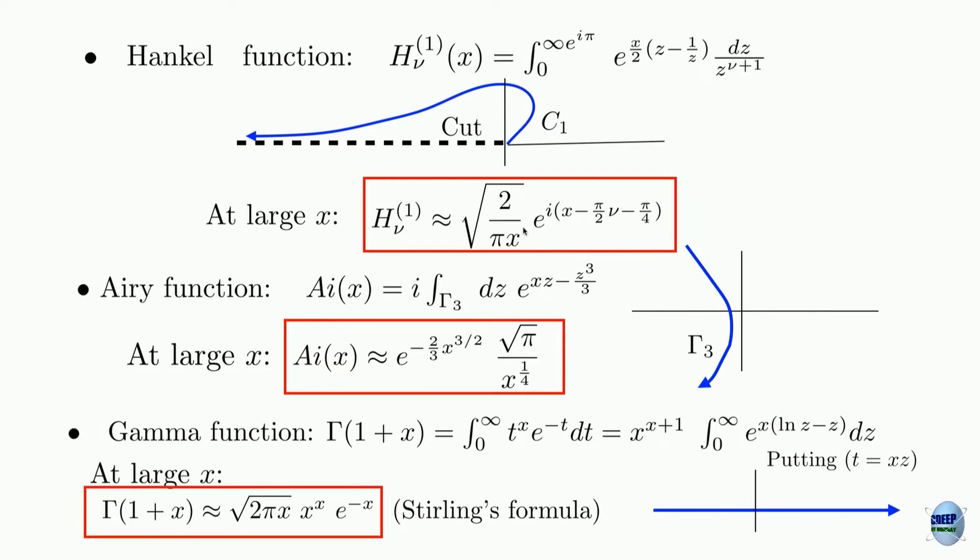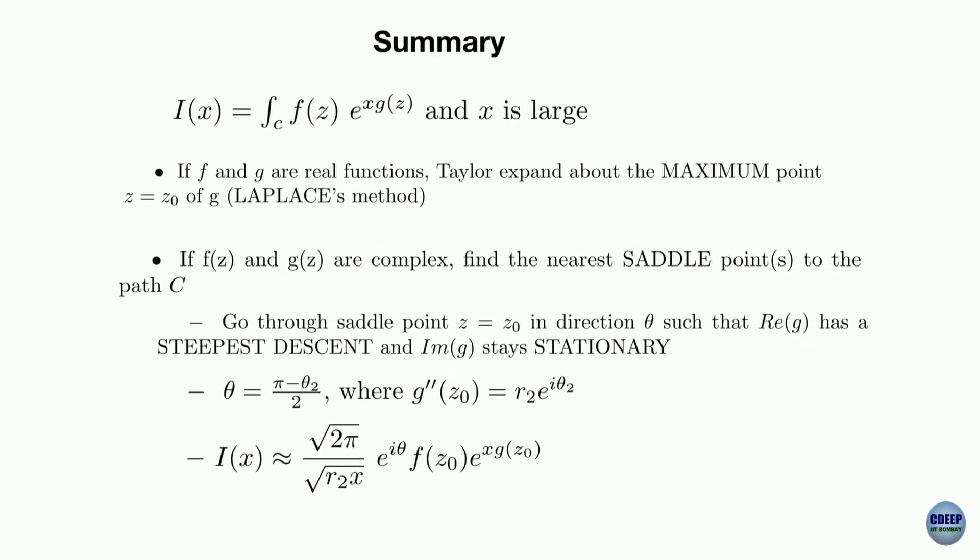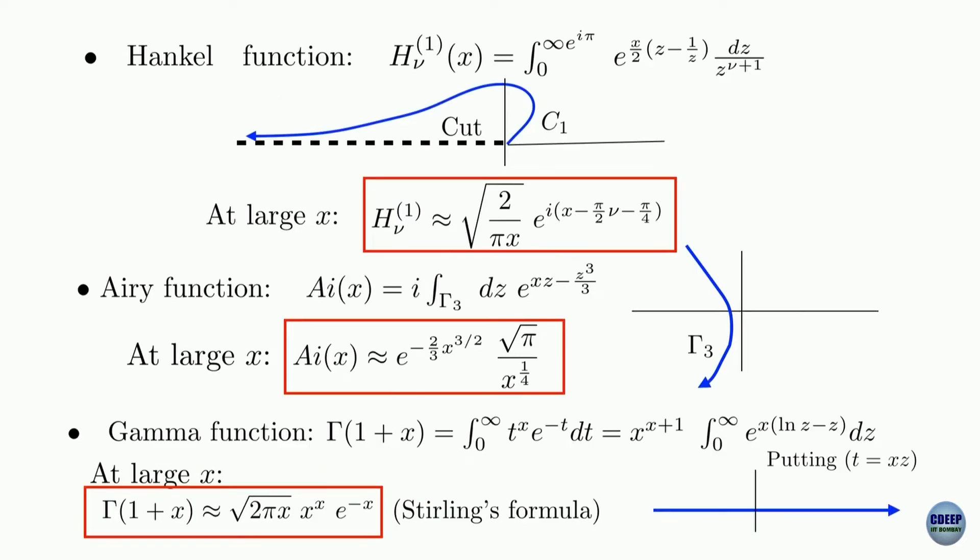Now e to the i x minus constant means it is a cosine—it is an oscillatory thing. Cosine of x minus constant plus i sine of x minus constant. So it is an oscillatory function of x whose amplitude is decaying with x like 1 over square root x. That is a very famous behavior of Hankel function.